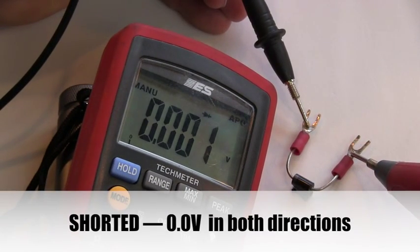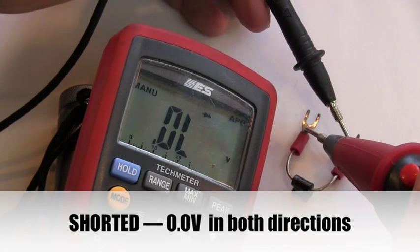If the diode is shorted, the readings will be zero volts in both directions.